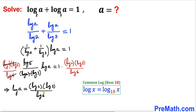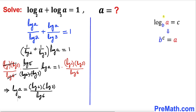The bases for all these logs are missing. Whenever the base is missing, by default the base is 10 — these are called common logs. Now applying the conversion rule from logarithmic form to exponential form, we get: a equals 10 to the power of (log 2 times log 3 divided by log 6).